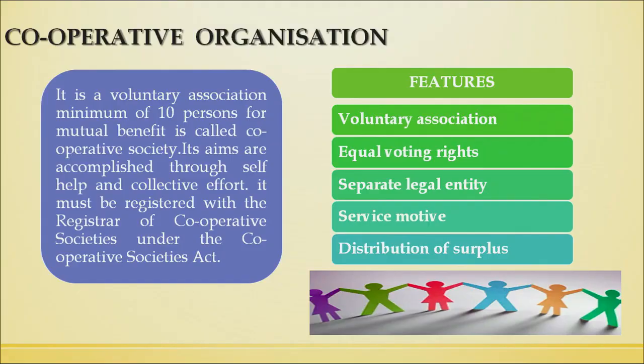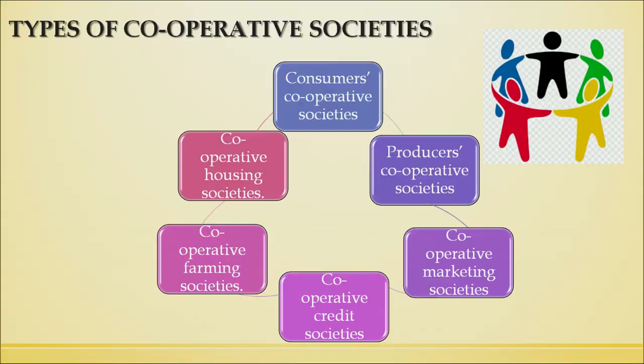The last feature is distribution of surplus — whatever surplus income or profits exist, they are divided among members in the form of dividend and bonus. There are various types of cooperative societies: consumer cooperative societies, producers cooperative societies, cooperative marketing societies, cooperative credit societies, cooperative farming societies, and cooperative housing societies. Consumer cooperative societies are formed by people who want high-quality products at reasonable prices — ten or more members source products directly from wholesalers or manufacturers at lower prices.